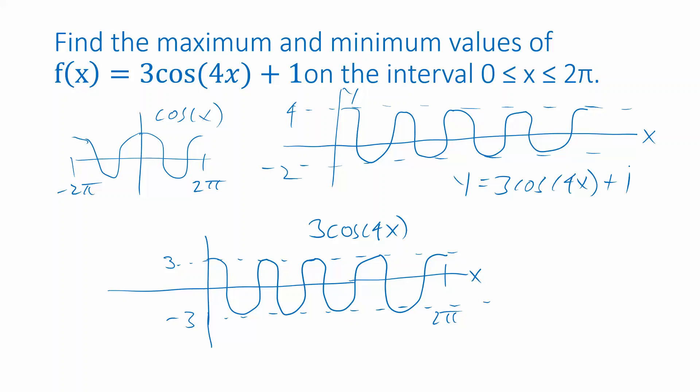Okay, and now I want to know what are the maximum and minimum values. And we can see that from this graph, the maximum output is 4. And the minimum output is negative 2.